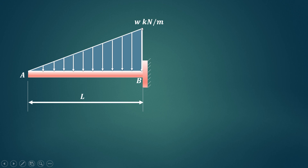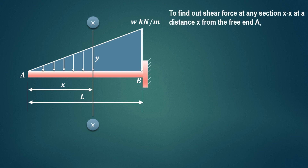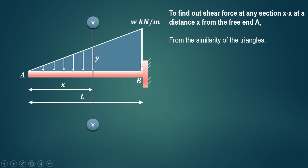First we'll find out the general expression for shear force at any section XX at a distance x from the free end A. Using similarity of triangles, we consider two triangles: the smaller triangle and the larger triangle. Height y divided by base x of the smaller triangle equals height W divided by base L for the larger triangle. Therefore y equals W upon L into x.